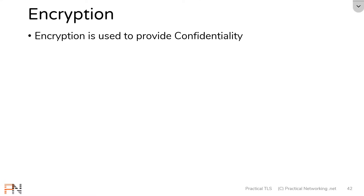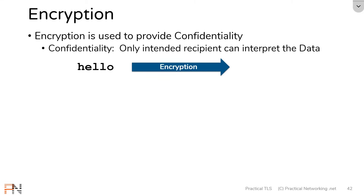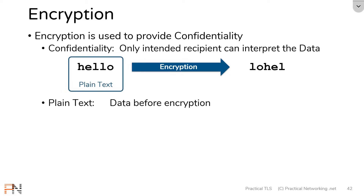Encryption is all about providing confidentiality. Confidentiality is the idea that only the intended recipient should be able to interpret the data you're trying to send. So let's say my original data is the word 'hello'. I'm going to put that through an encryption algorithm that's going to turn that into something undecipherable by anybody else. The data before I encrypted it is referred to as plaintext — also sometimes referred to as cleartext. Those are both two words that mean the same thing.